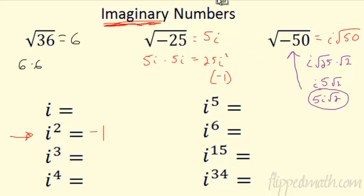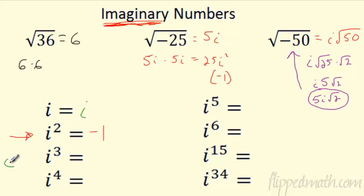Let's go ahead and fill in this table for imaginary numbers. i is just i. i squared is the key — that's where the magic happens. i squared is negative 1. What's i cubed? i cubed is really i squared times i. So if i squared is negative 1 and i is i, then i cubed is actually negative i.